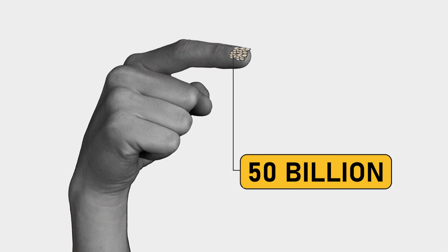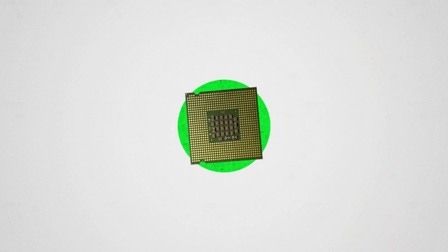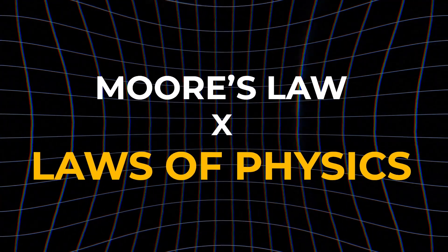Nowadays, the size of transistors is already measured in atoms, on the nanometer scale. But you can't make a transistor with just one atom. We are reaching the minimum size for transistor design, the point where Moore's Law will run into the laws of physics.